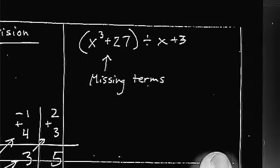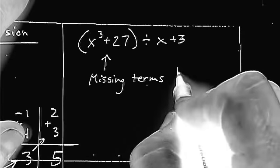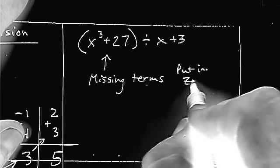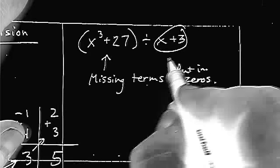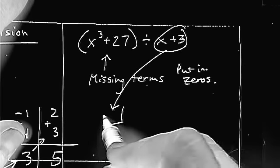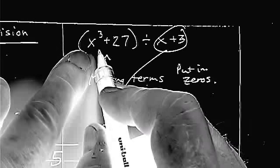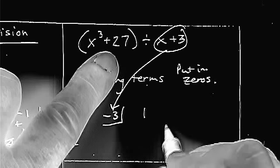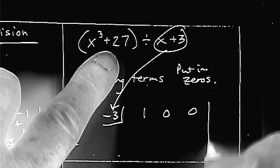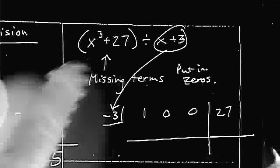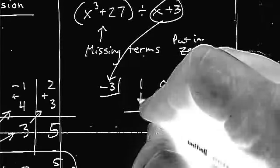Now, what happens if you have a division problem, but there are missing terms? Don't forget to put in zero. Put in zeros. So, for instance, from x plus 3, the zero would be negative 3. Now, let's look at our coefficients. I've got a 1 for the cubic term. I don't have a squared term, so I'm going to put zero. I don't have a linear term, so I'm going to put zero. And the last thing I'm going to put is the constant, 27.